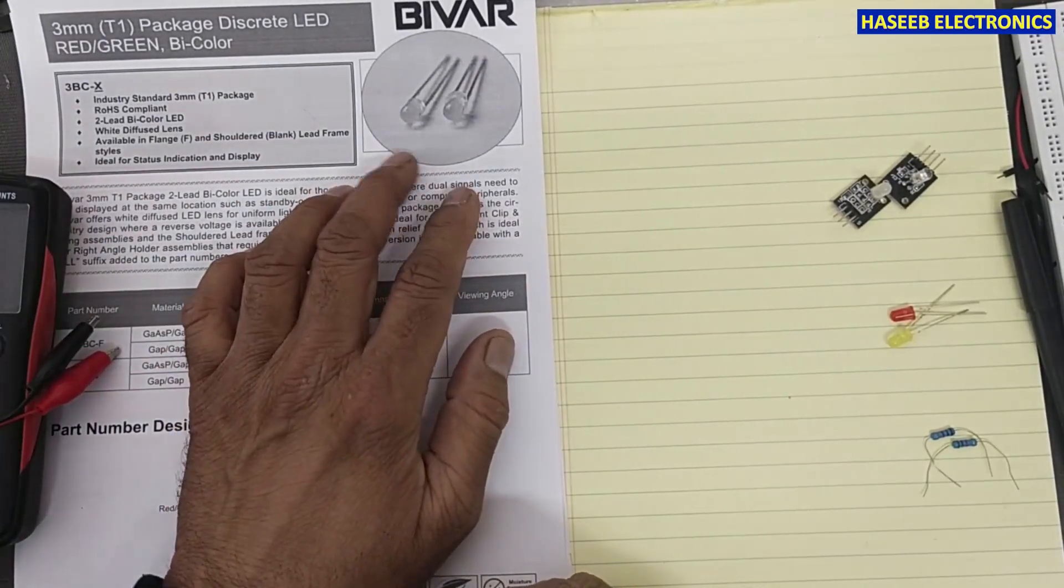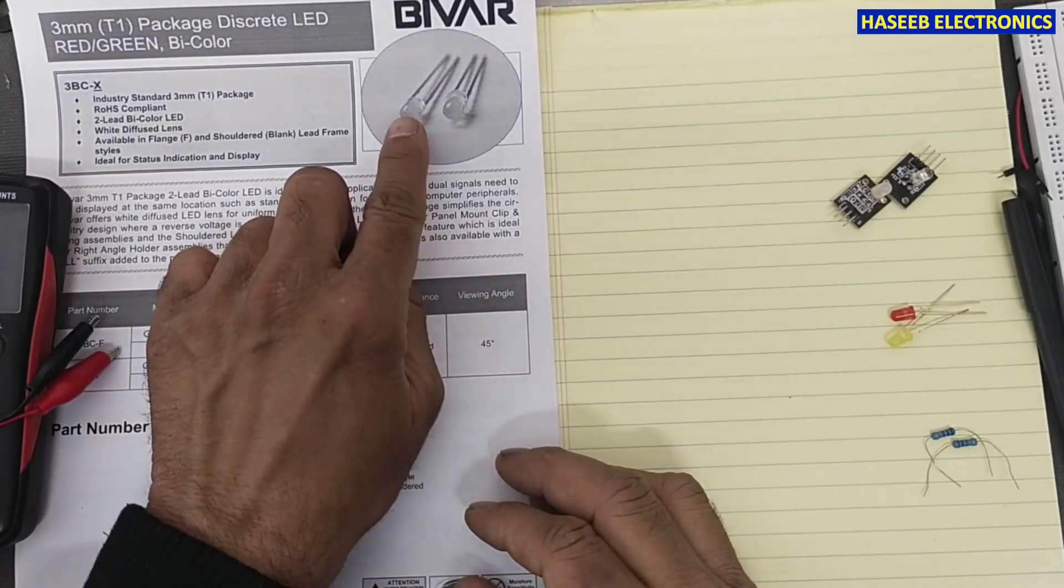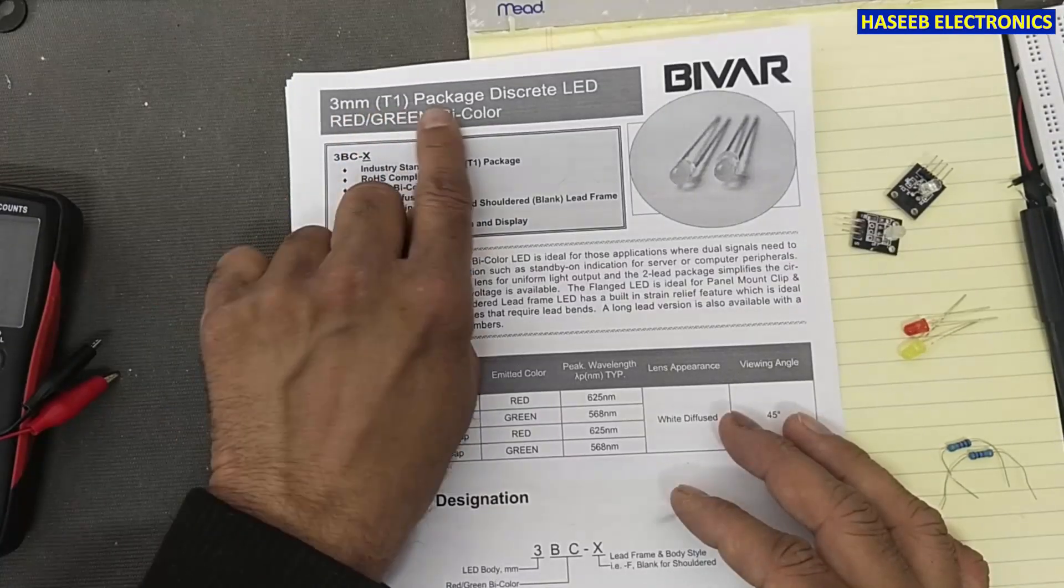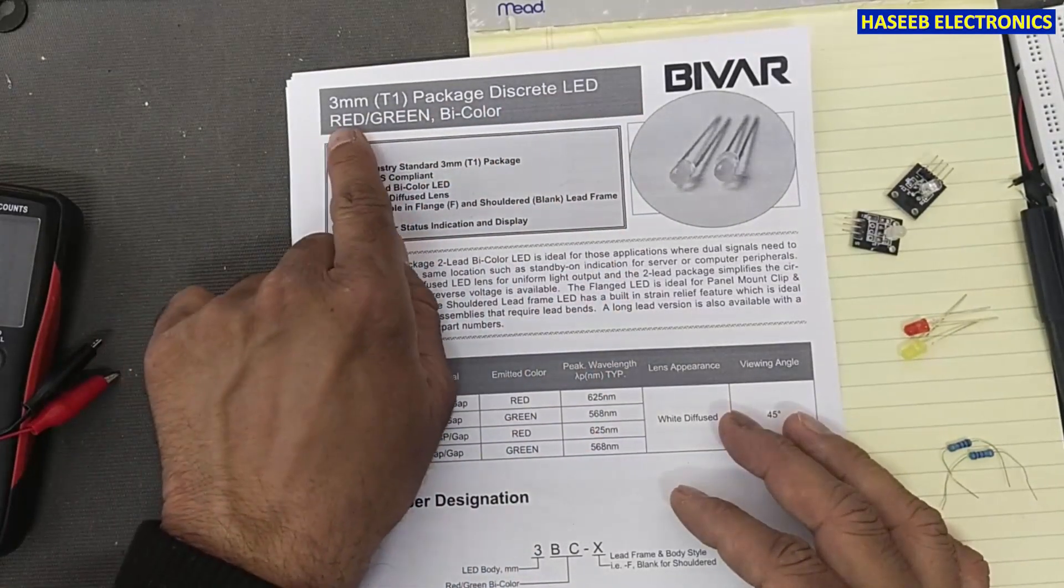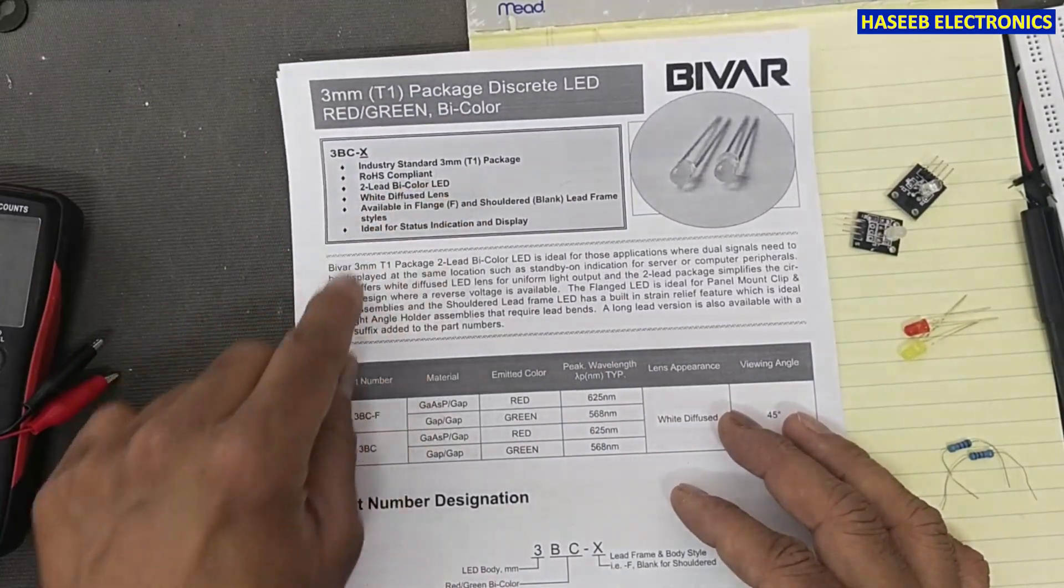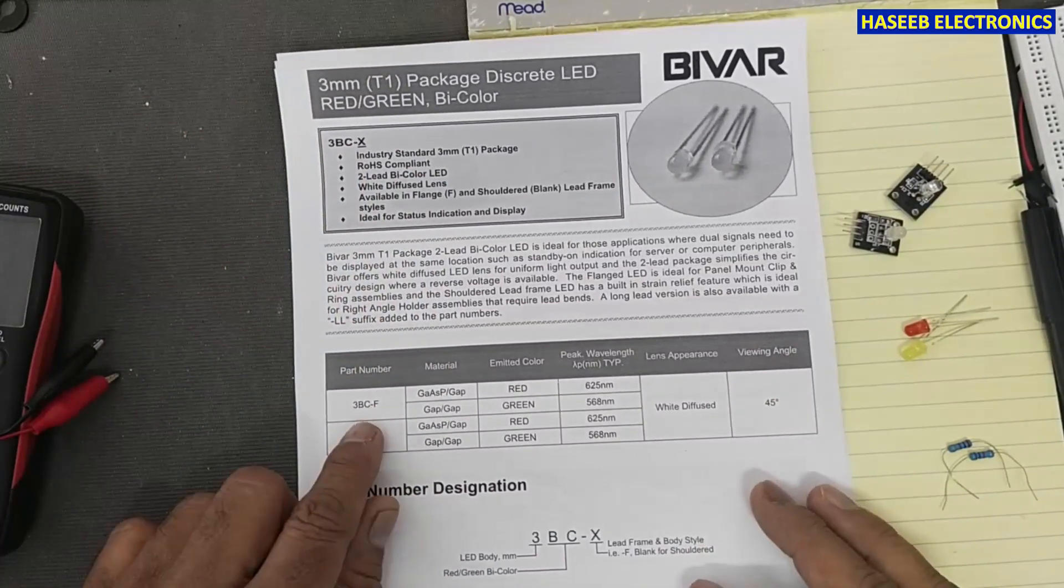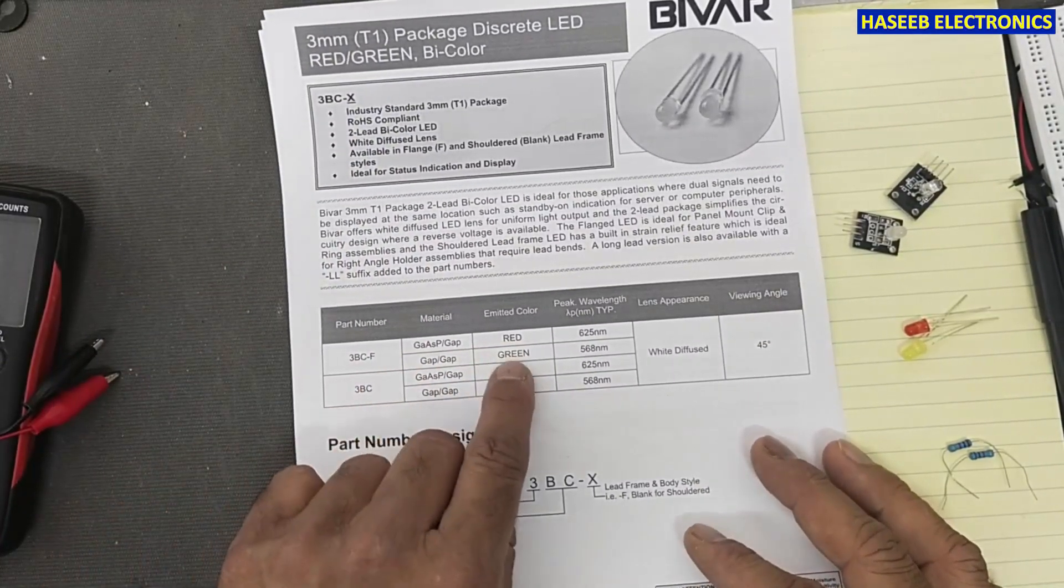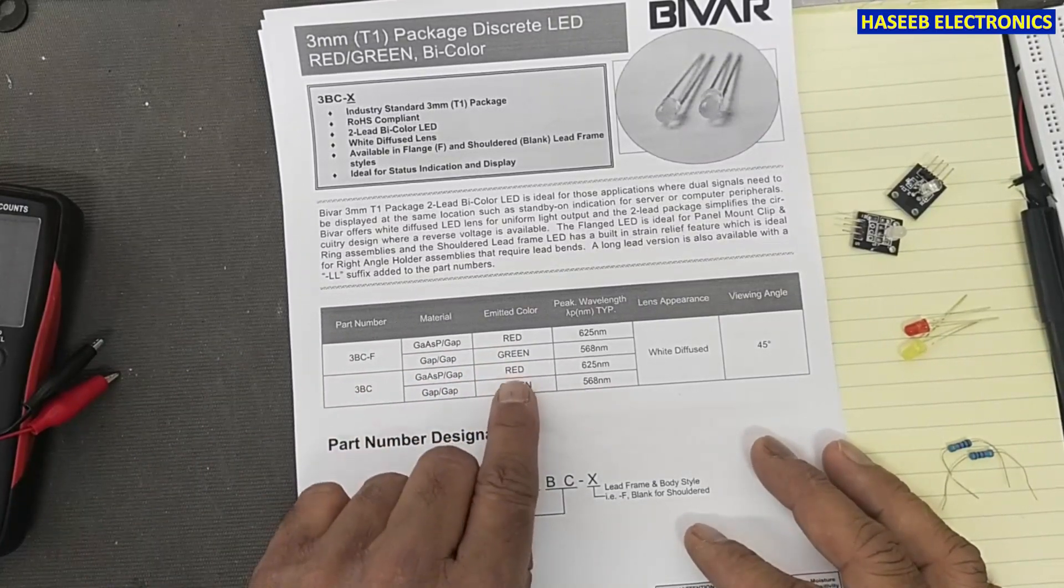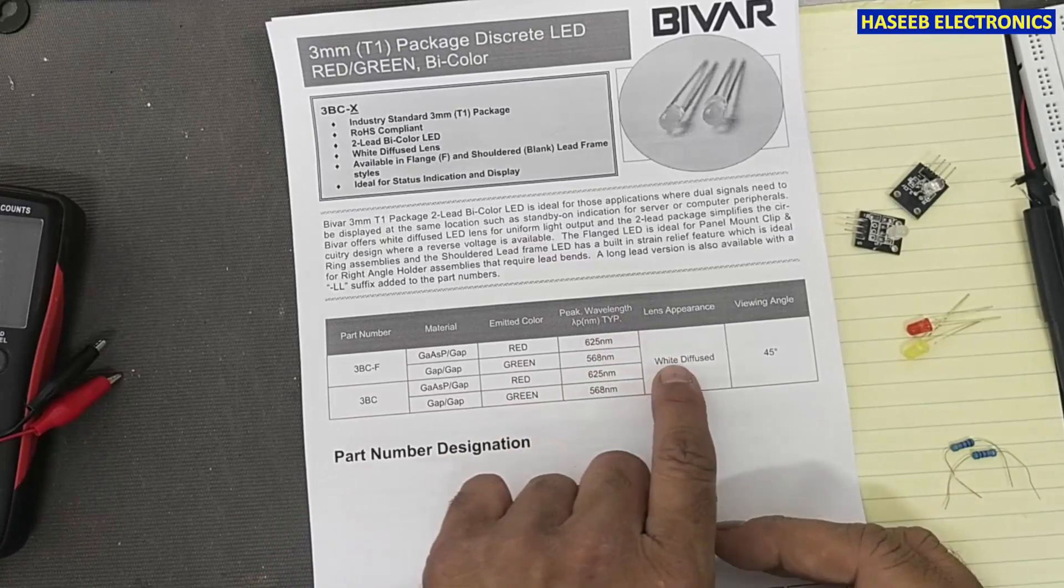Let's see. There are many LEDs available in the market with different part numbers. We will see some examples. This LED is a 3-millimeter package, red-green bi-color, two-lead bi-color LED. It is 3BC family. This one is red and green, this is also red and green. Here is the wavelength and package details.